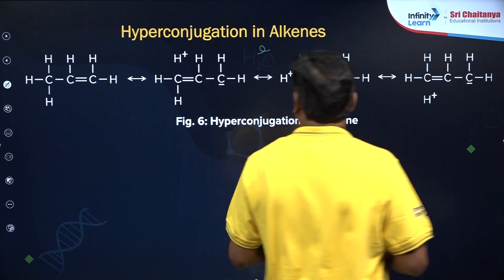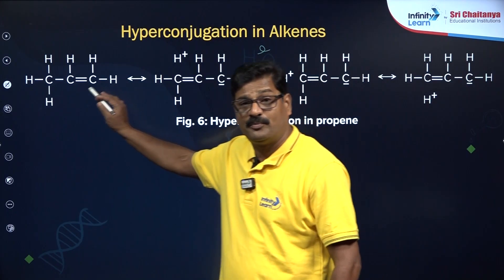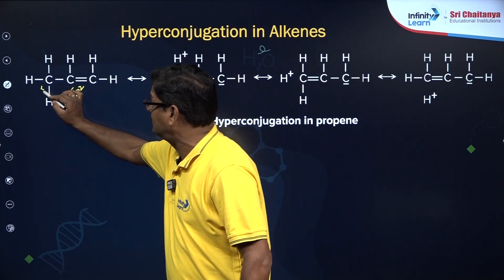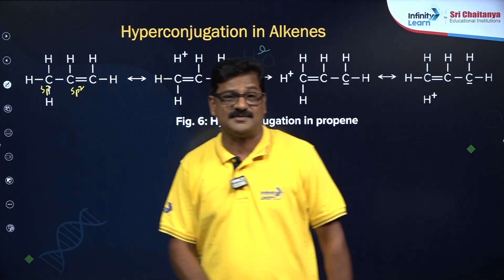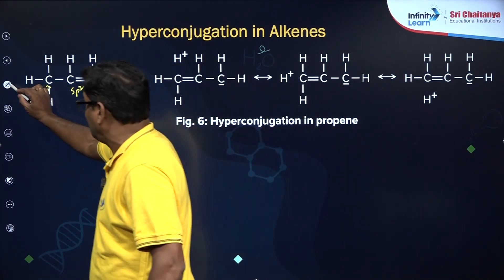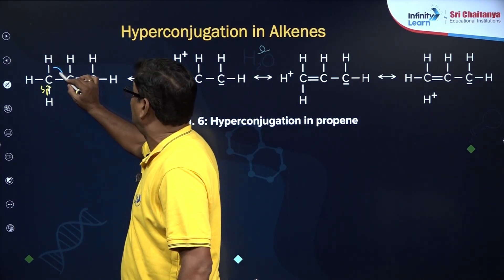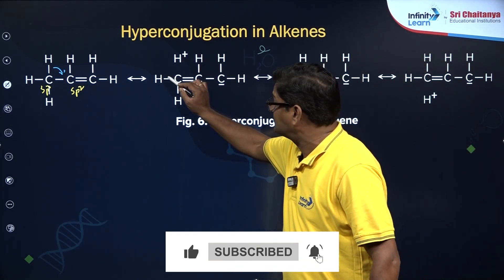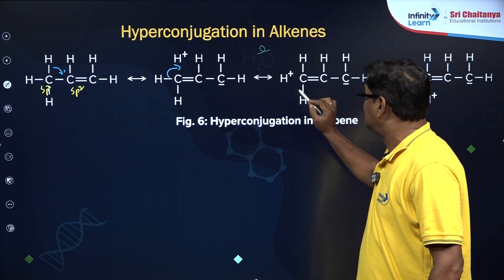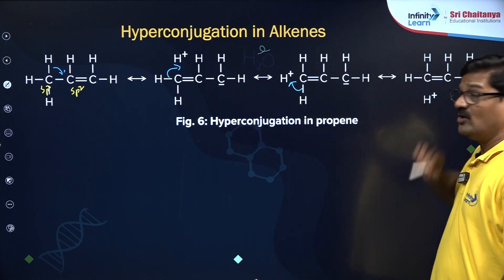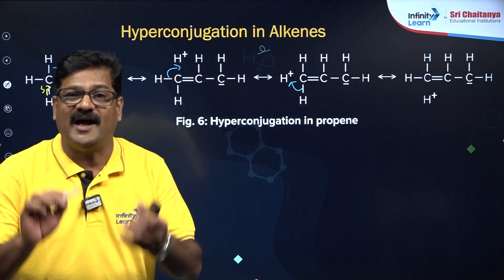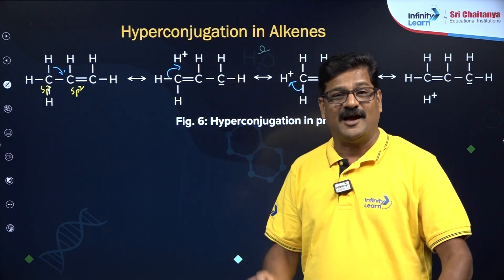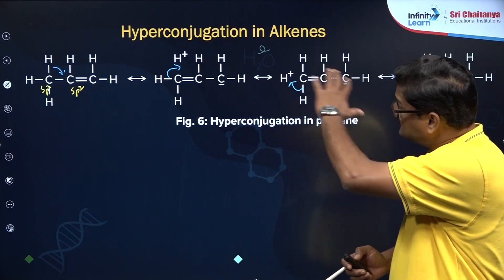We can also see hyperconjugation in alkenes. In propene, the SP2 hybridized carbon and the SP3 hybridized carbon are present. Wherever there is an alpha hydrogen, it participates in conjugation, giving a delocalized structure. So hyperconjugation is seen in carbocations, in free radicals, and in alkenes.